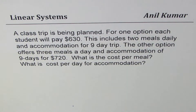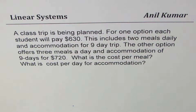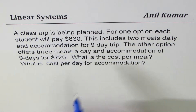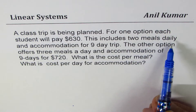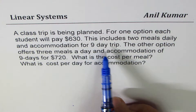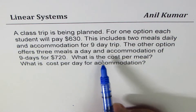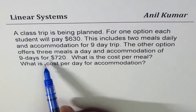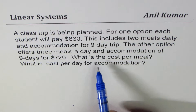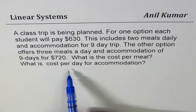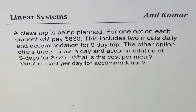I'm Adil Kumar sharing with you a test question from my student's test paper on linear systems. A class trip is being planned. For one option, each student will pay $630 — this includes two meals daily and accommodation for a nine-day trip. The other option offers three meals a day and accommodation for nine days for $720. What is the cost per meal? What is the cost per day for accommodation?